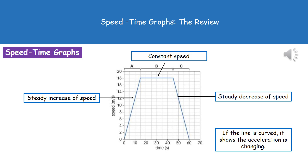It's a steady decrease because it's a diagonal line again. If we had a curved line on our graph, then we would know that the acceleration is changing.